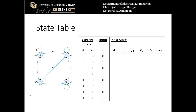When the current state is 00 and the input is 0, we transition to state 01. When the current state is 00 and the input is 1, we stay in state 00. When the current state is 01 and the input is 0, we transition to state 10. When the current state is 01 and the input is 1, we also transition to state 10.